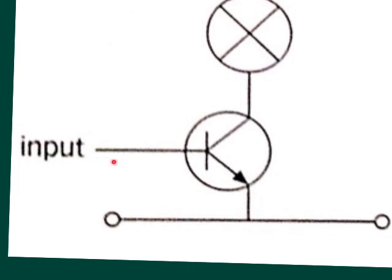You will notice that this line or wire going into the base is labeled as the input. If the voltage between the base and the emitter is low, no current will flow through this part of the circuit, and therefore no current will flow through the second circuit.